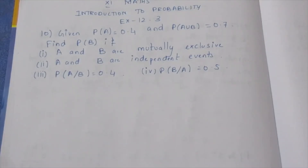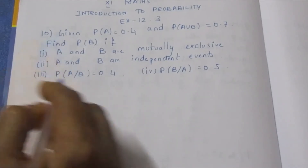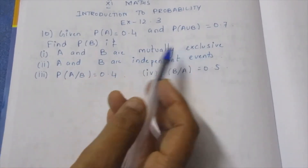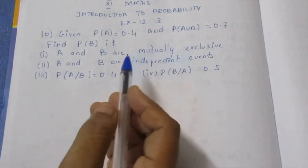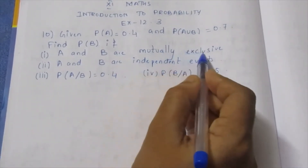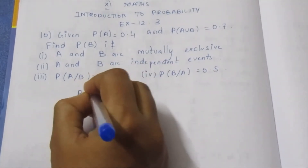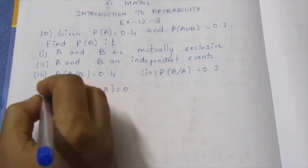This is very easy. First subdivision: A and B are Mutually Exclusive. For Mutually Exclusive events, the key formula concept is that P(A∩B) equal to 0.